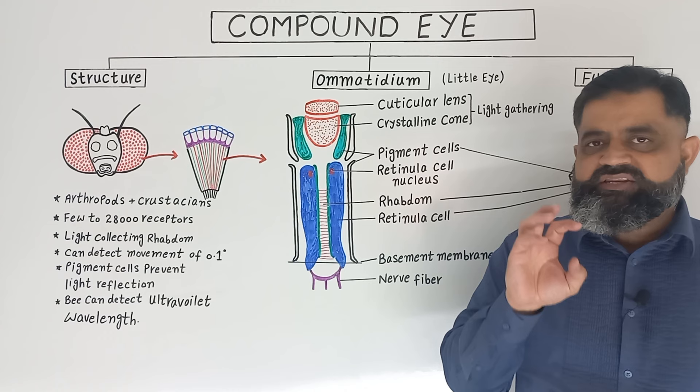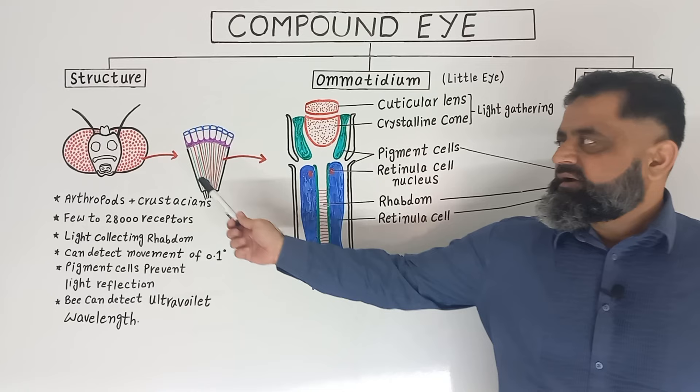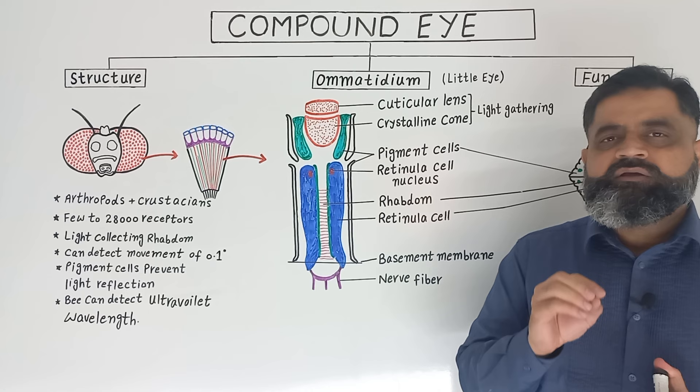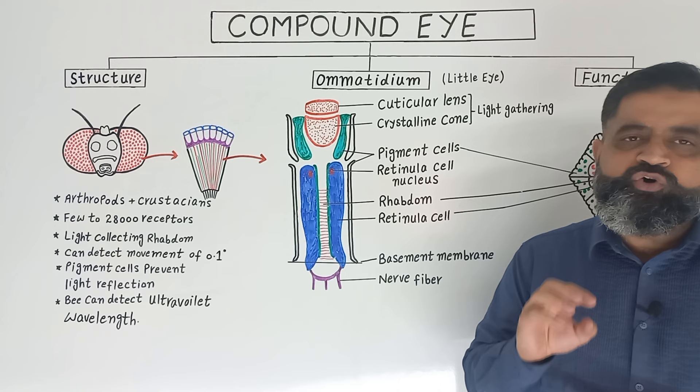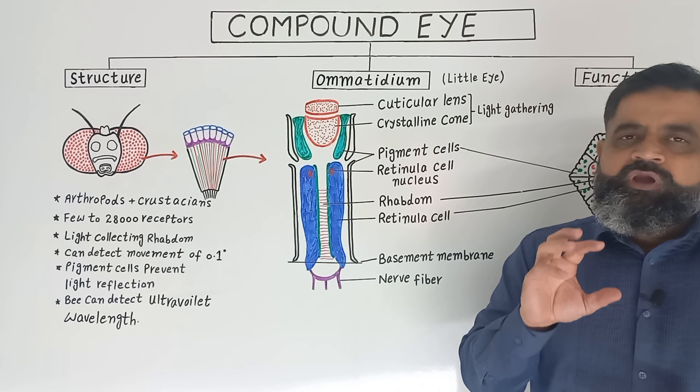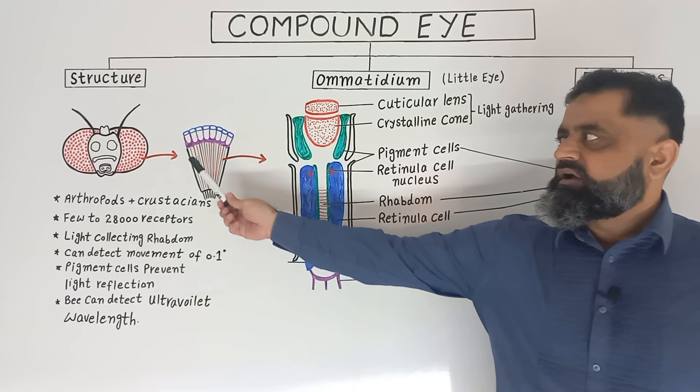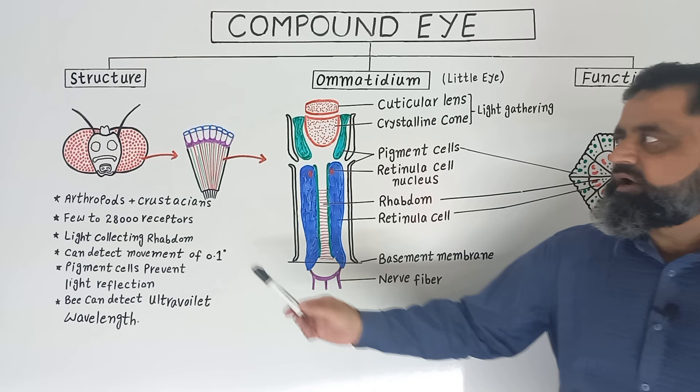I have taken a section of an eye of an insect from phylum Arthropoda. As you can see, the eye of an insect contains many thousands of units which are known as ommatidia, or singular ommatidium, which means 'little eye'.